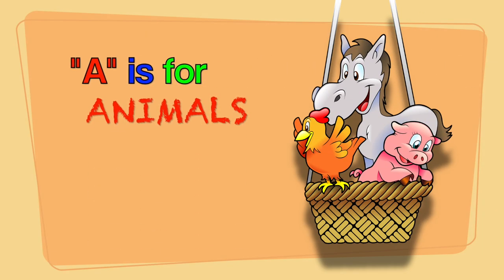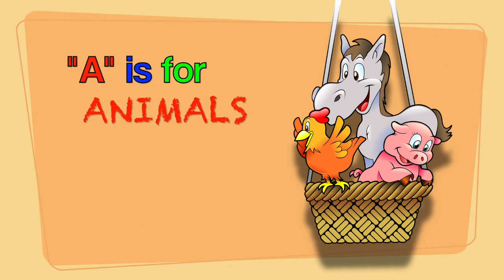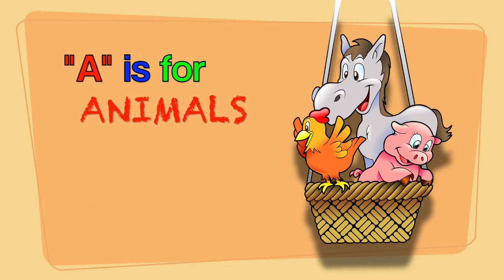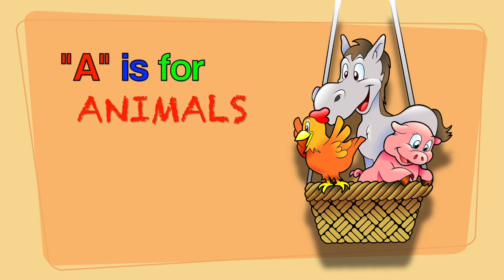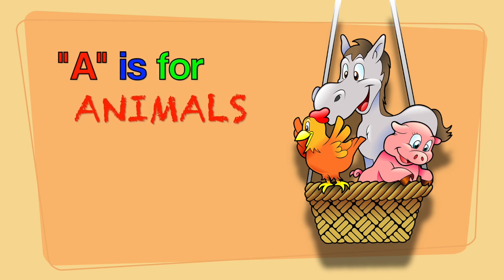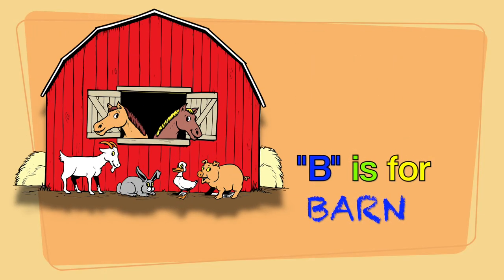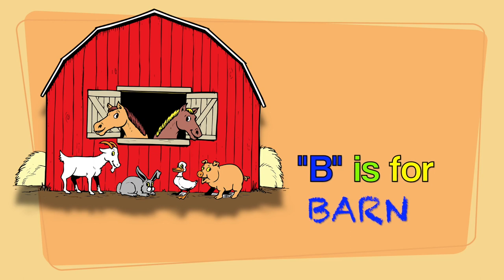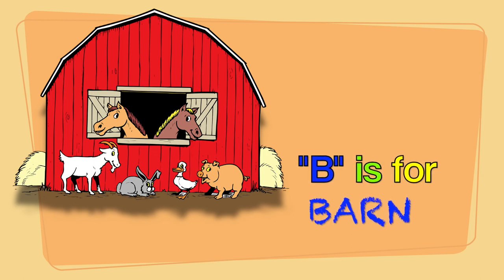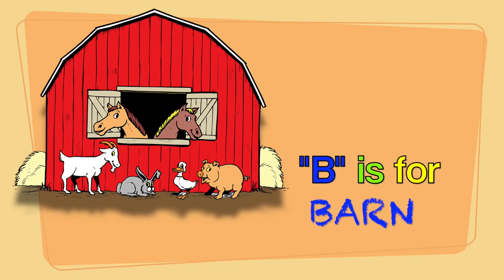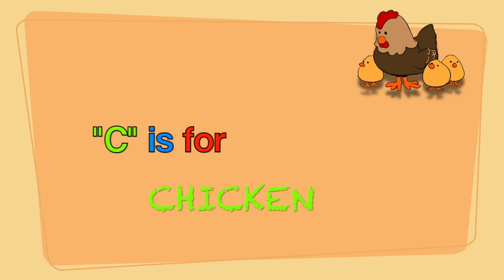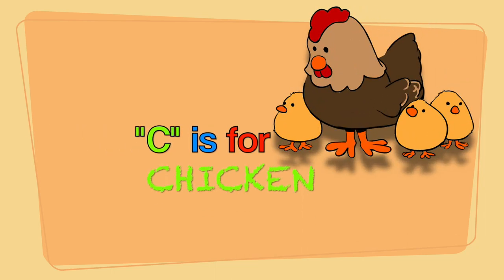A is for animals. B is for barn. C is for chicken.